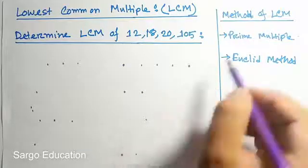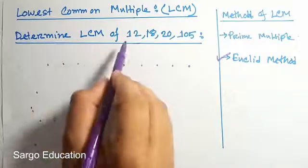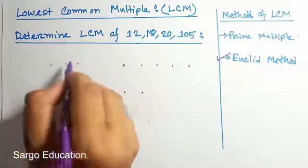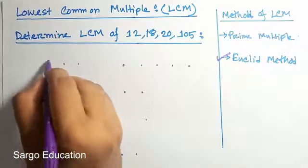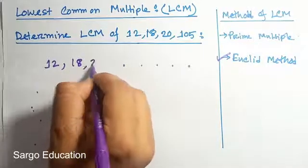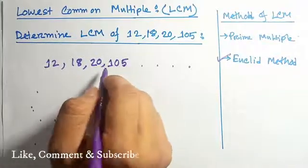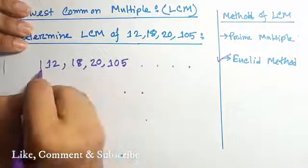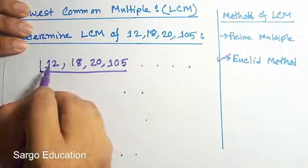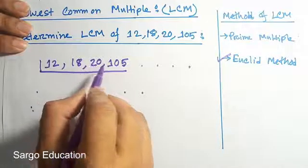Today we will learn Euclid method of LCM. Here we take some numbers: 12, 18, 20, and 105. Now we write 12, 18, 20, 105. Now we determine their LCM.